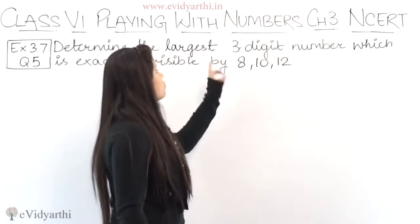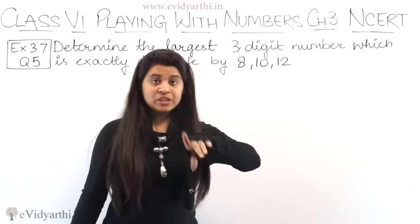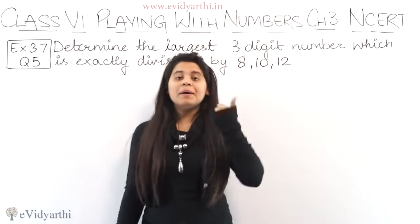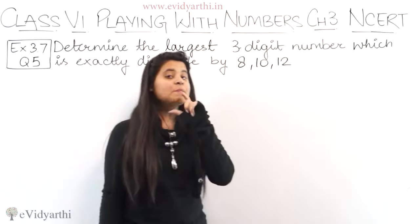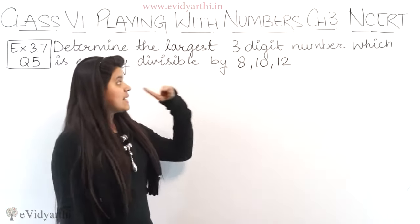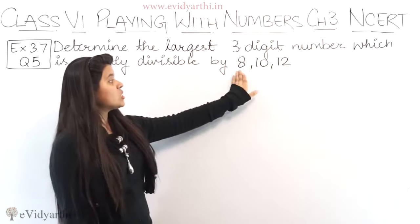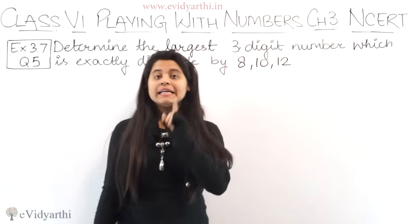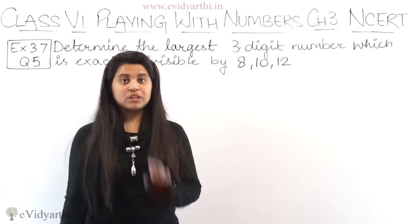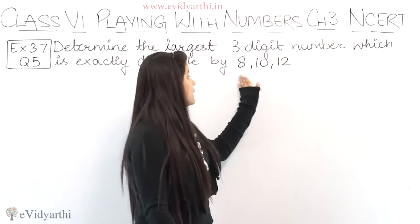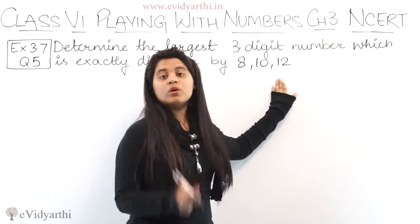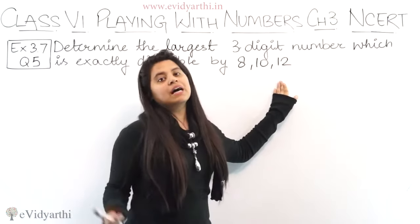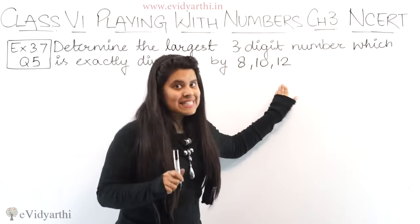What should the largest 3-digit number be? The main thing is how many numbers should be divisible by these three numbers. If we think about which number that is, then we will find the LCM of these 3-digit numbers.